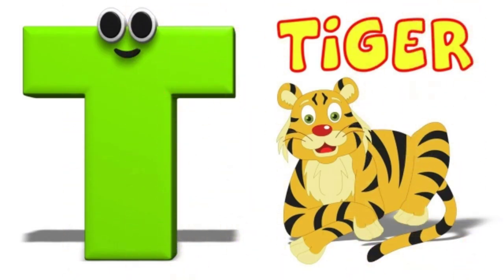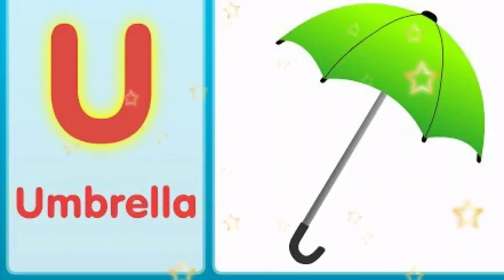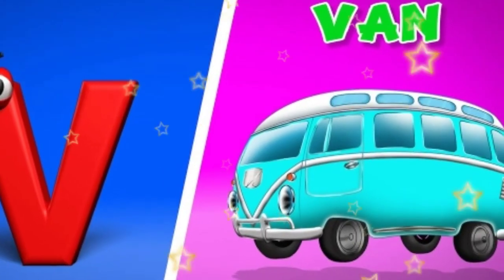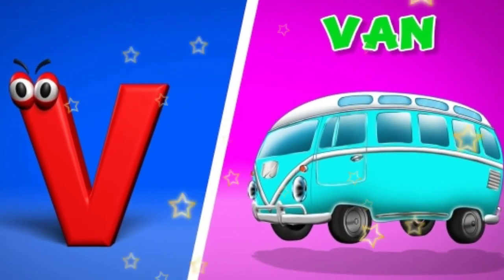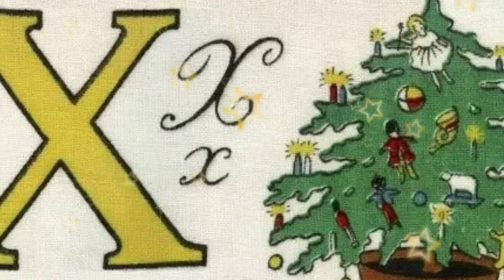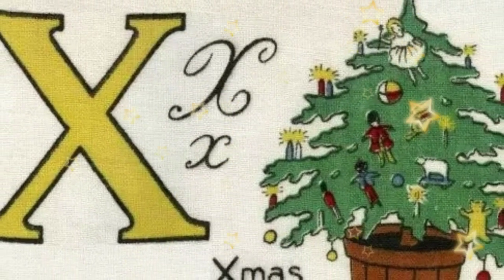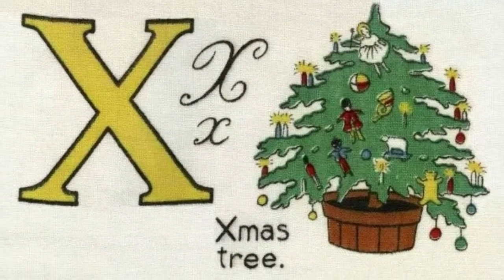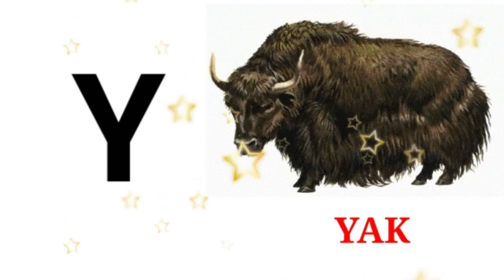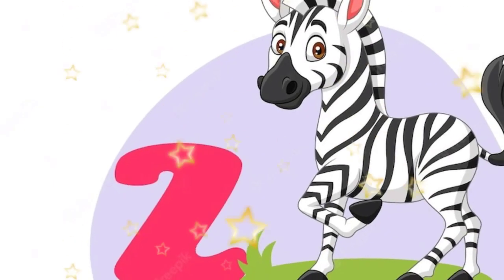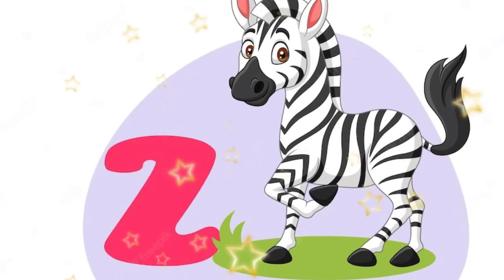T for tiger, U for umbrella, V for van, X for xmas tree, Y for yak, Z for zebra.